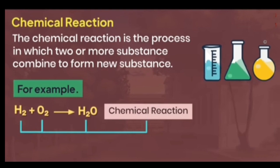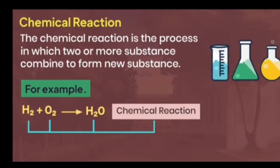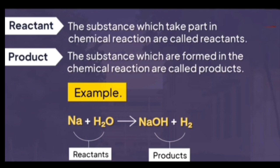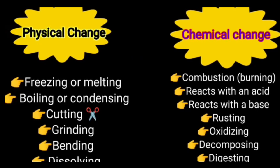In a chemical equation, the left side of the arrow represents the reactants and the right side represents the products. Reactants are the substances which take part in a chemical reaction. Products are the substances which are formed in the chemical reaction. For example, Na plus H₂O combines to form NaOH plus H₂ — Na and H₂O are reactants, and NaOH plus H₂ is the product.